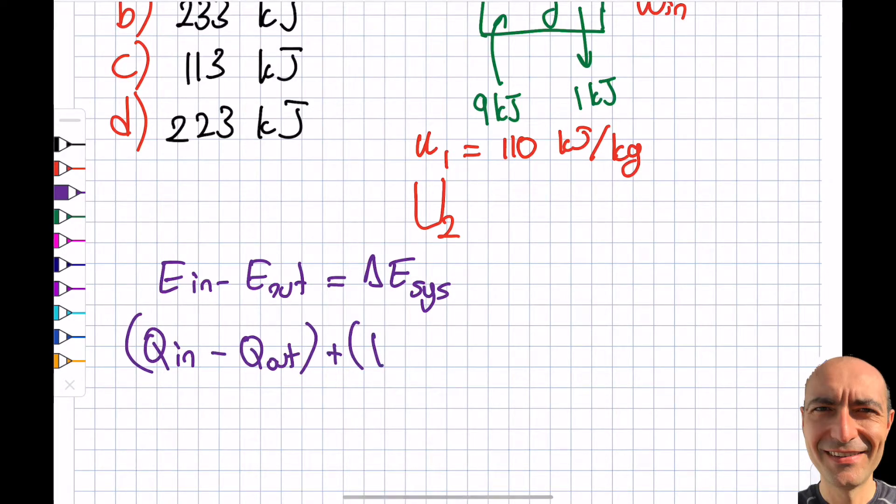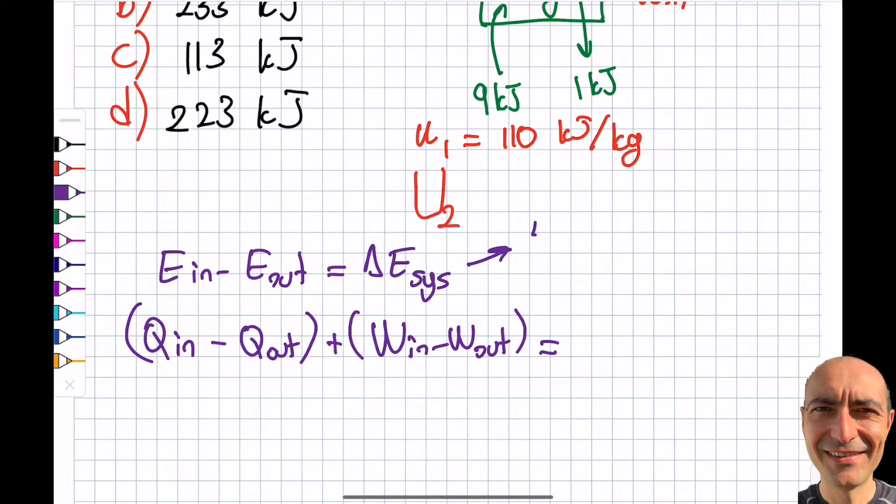E in will have two components because it's a closed system, so I'm going to have heat transfer in minus heat transfer out plus work in minus work out, equal to Delta E. It has three components: Delta PE, Delta KE, and Delta U. Delta PE and Delta KE are going to be zero for a stationary system.